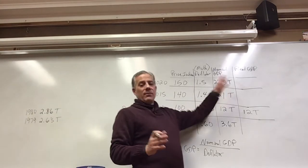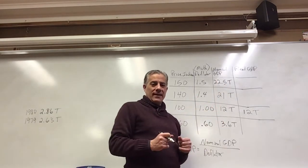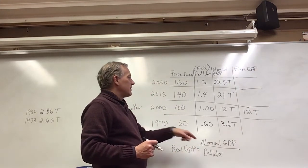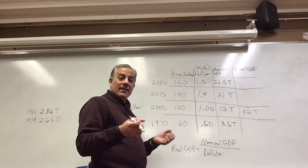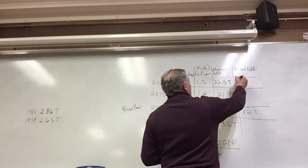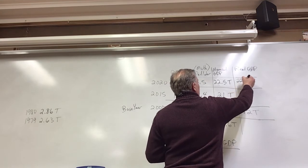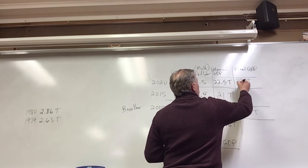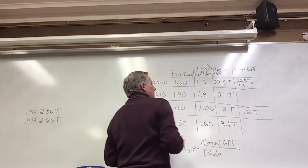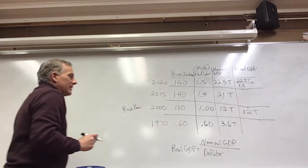And then calculating, we've done the hard part. We're going to calculate doing this division, so don't worry, I set up the math so that things divide nicely. 22.5 trillion divided by 1.5, my real GDP here is going to be 15 trillion.